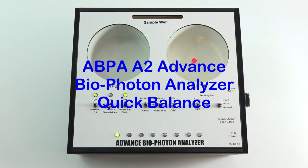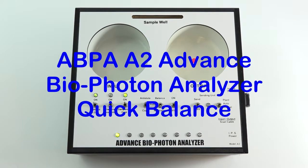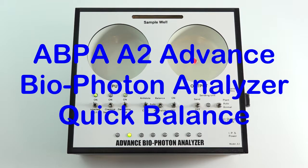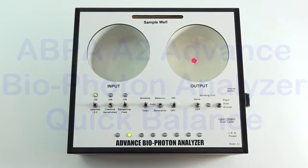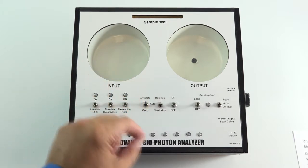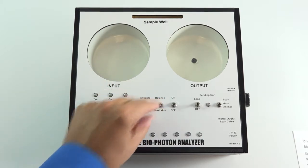One of the quickest and easiest ways to use the advanced biophoton analyzer is for a quick energetic balance. Set the ABPA control switches to antidote, neutralize.